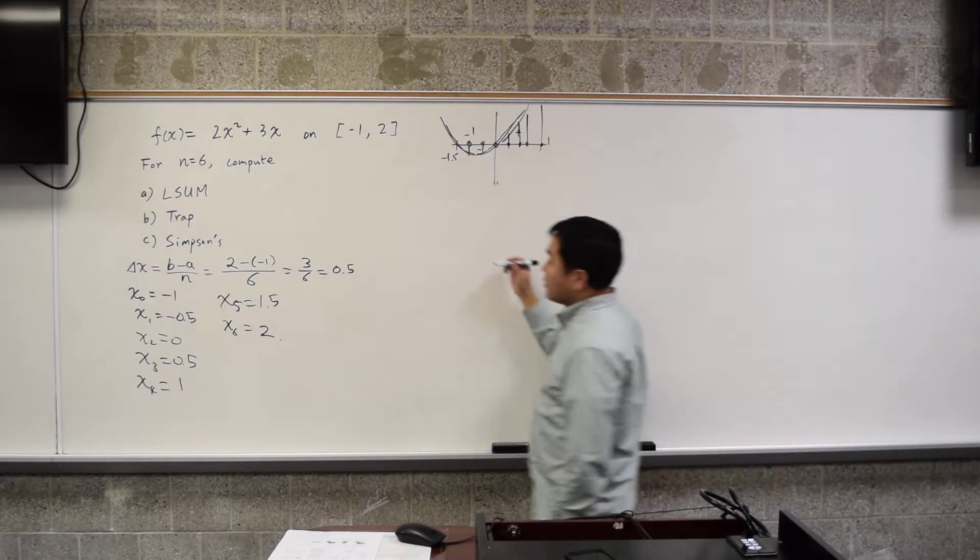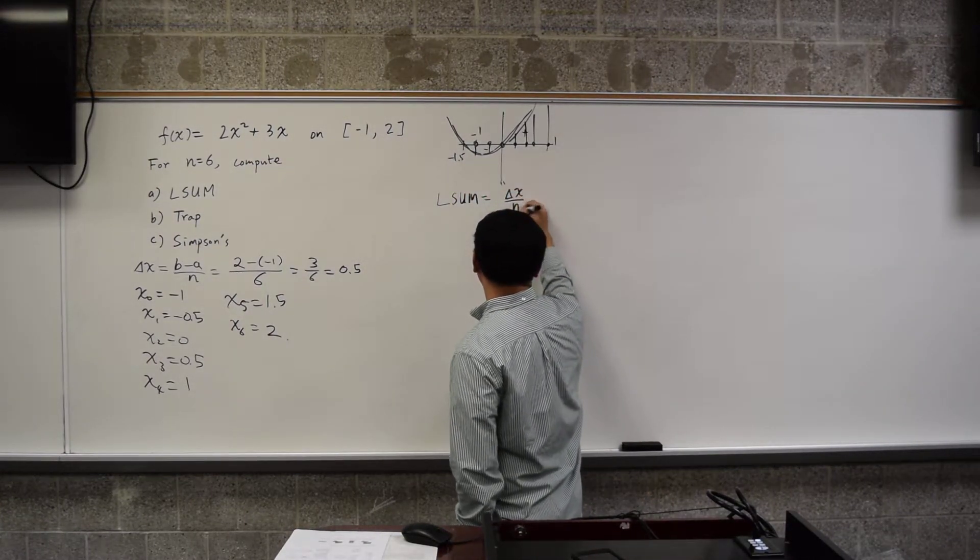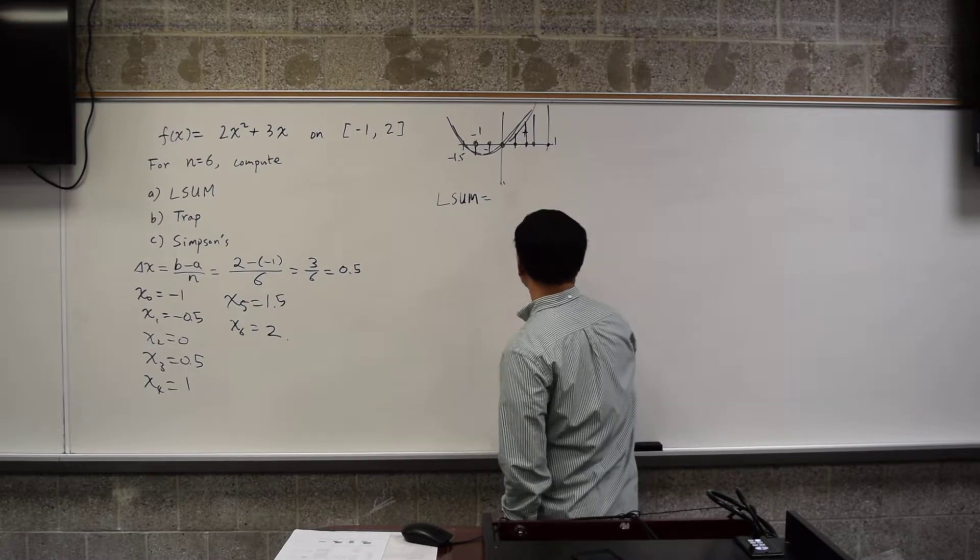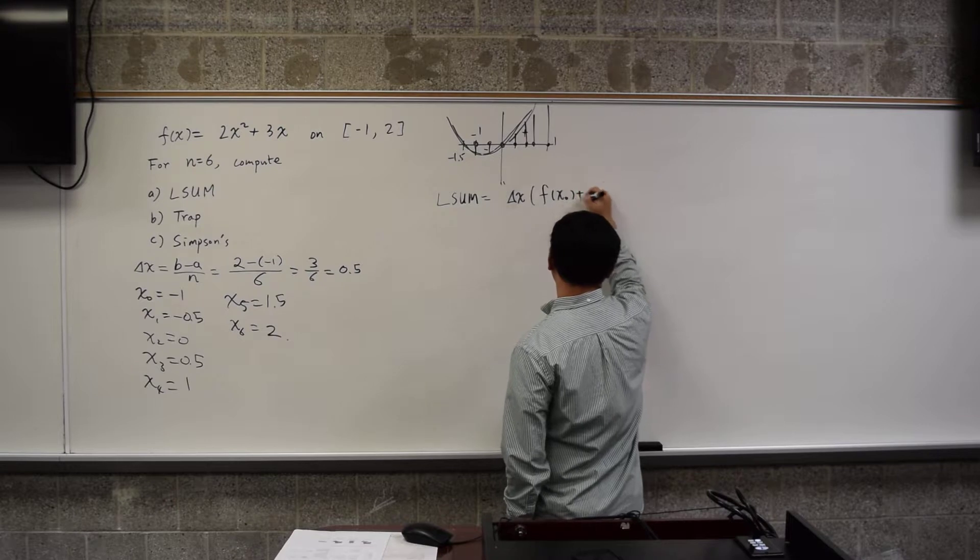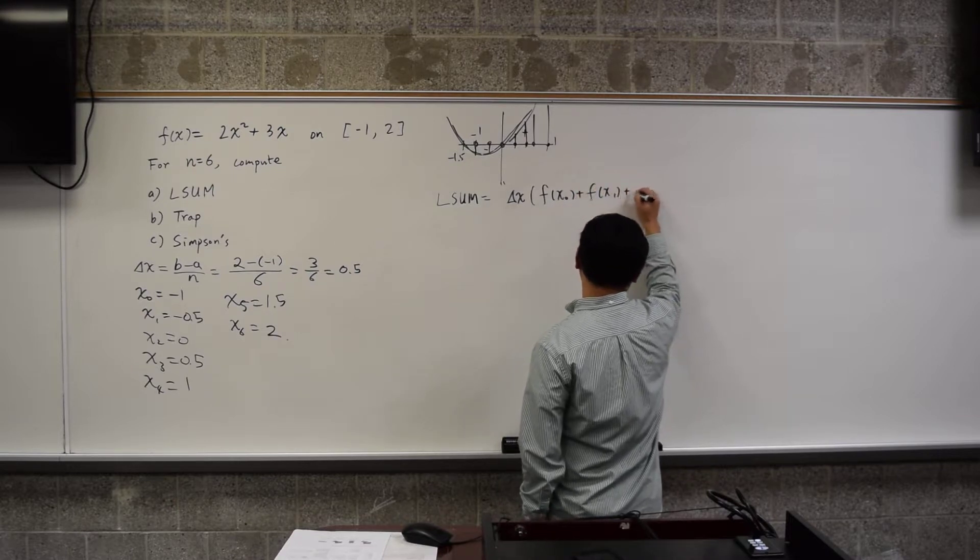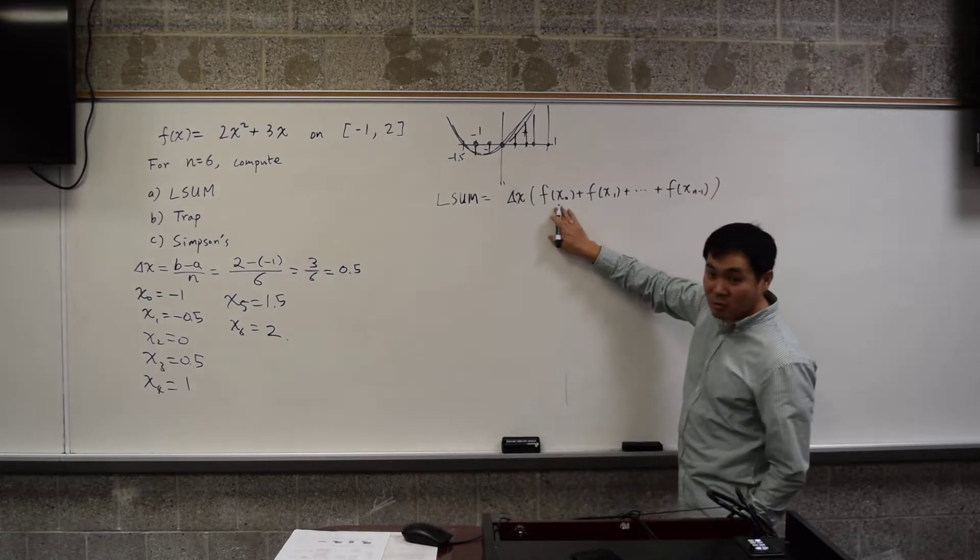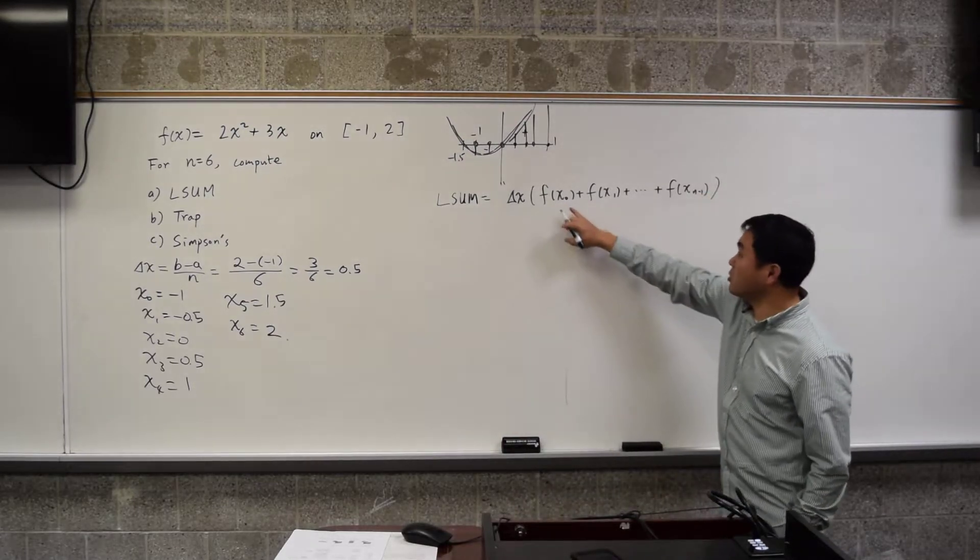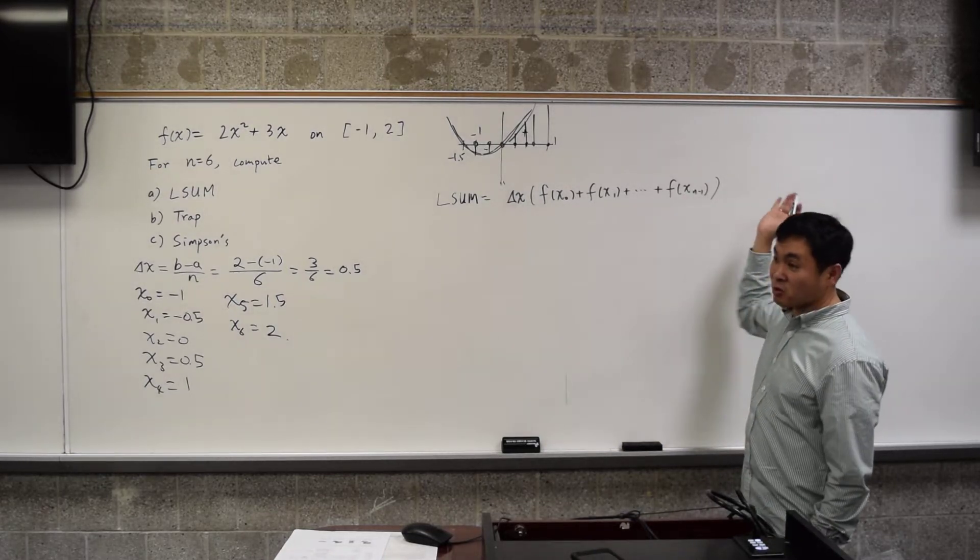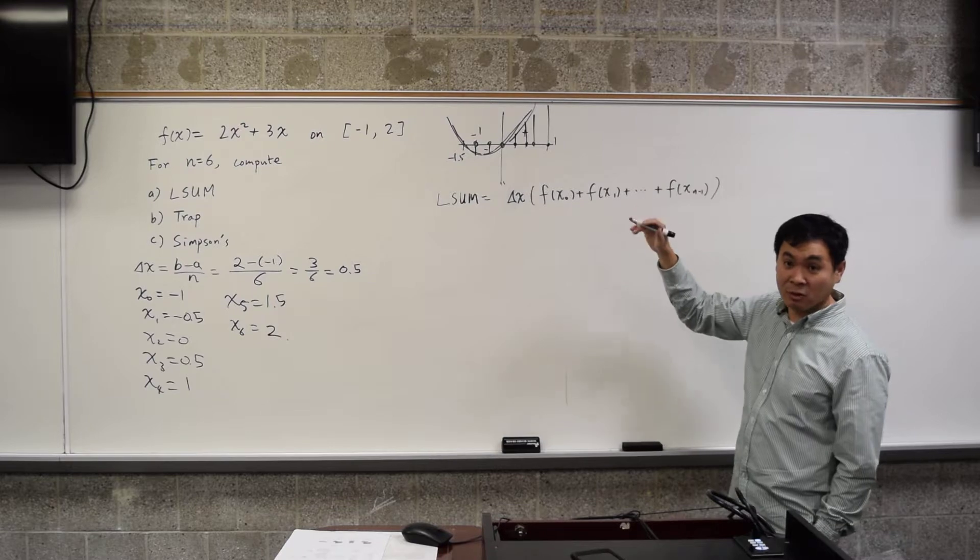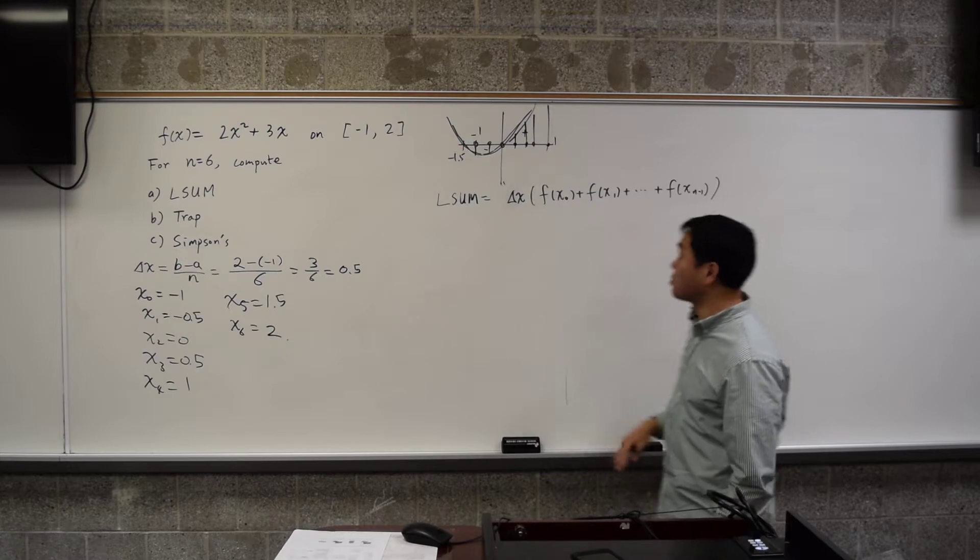All right. Now, what is the L-sum? The L-sum is delta x times f of x0 plus f of x1 all the way up to f of x n minus 1. You start at the beginning, x0, include the beginning. You exclude the xn, the very last one, because you're using the left endpoints of each subinterval. You don't get to use the last point because that's the right endpoint of the last interval. So that's irrelevant.